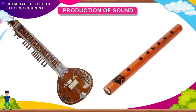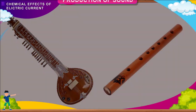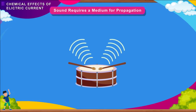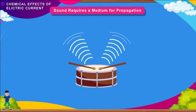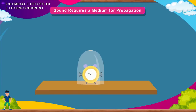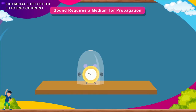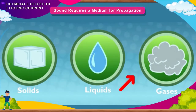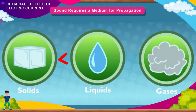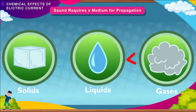The sound we produce is also the result of vibrations caused by our vocal cords. Sound requires a medium for propagation. The movement of sound through a medium is called propagation of sound. Sound cannot travel through vacuum — it needs a medium. It can travel through solids, liquids, and gases. However, it travels faster in solids than in liquids, and faster in liquids than in gases.